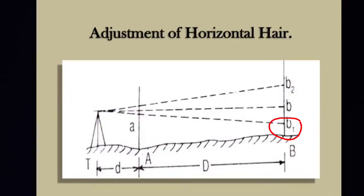After that, the telescope is transited and staff readings at A and B are noted again. If the initial value and the value after transiting are different, you can adjust the horizontal hair because it is very accurate. For example, after transiting, if we get a value B2 that differs from B1, then horizontal hair adjustment is needed.